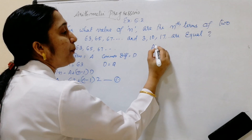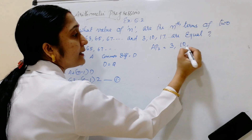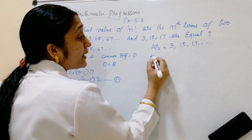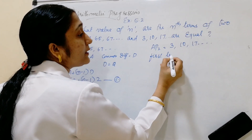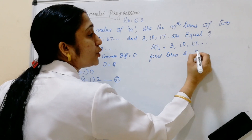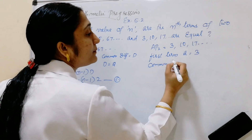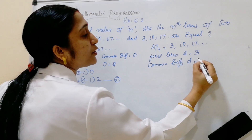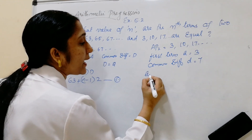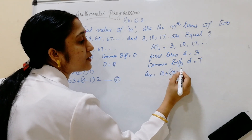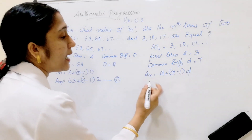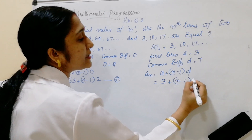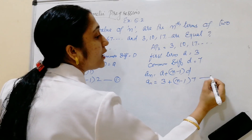Next, arithmetic progression 2, AP2, is 3, 10, 17, etc. From this, the first term a is equal to 3. The common difference, small d, is 10 minus 3 which equals 7. The nth term formula: a_N = a + (N−1) × d. Substituting: a_N = 3 + (N−1) × 7. This is equation number 2.